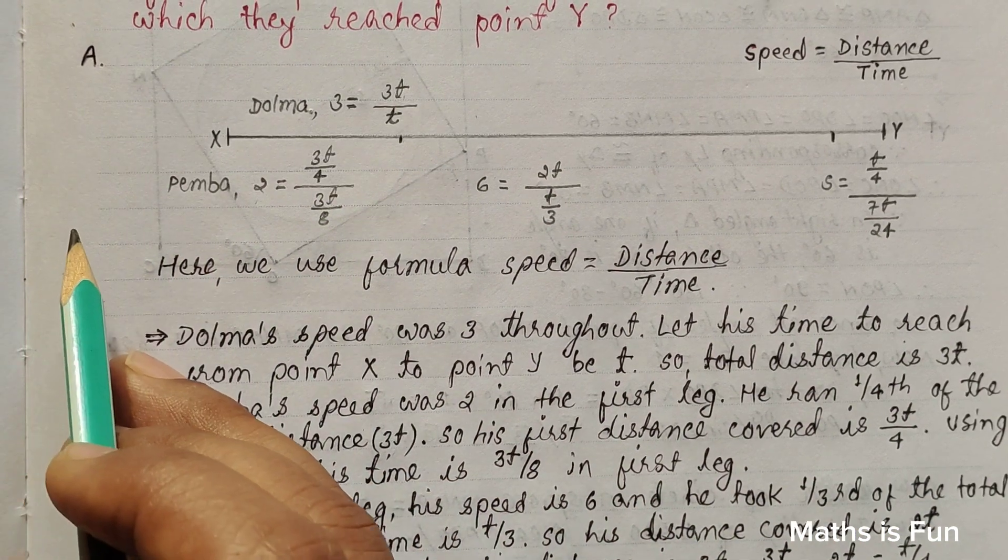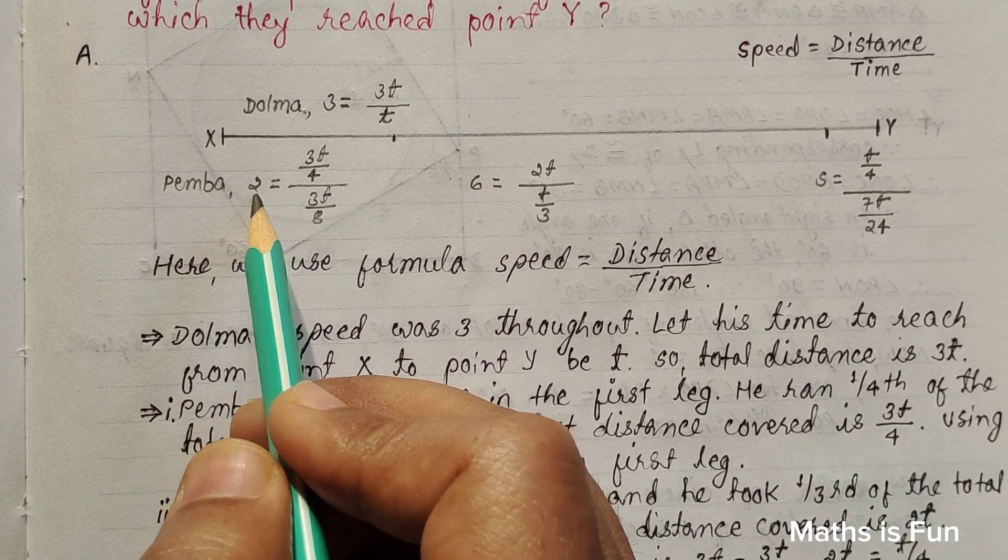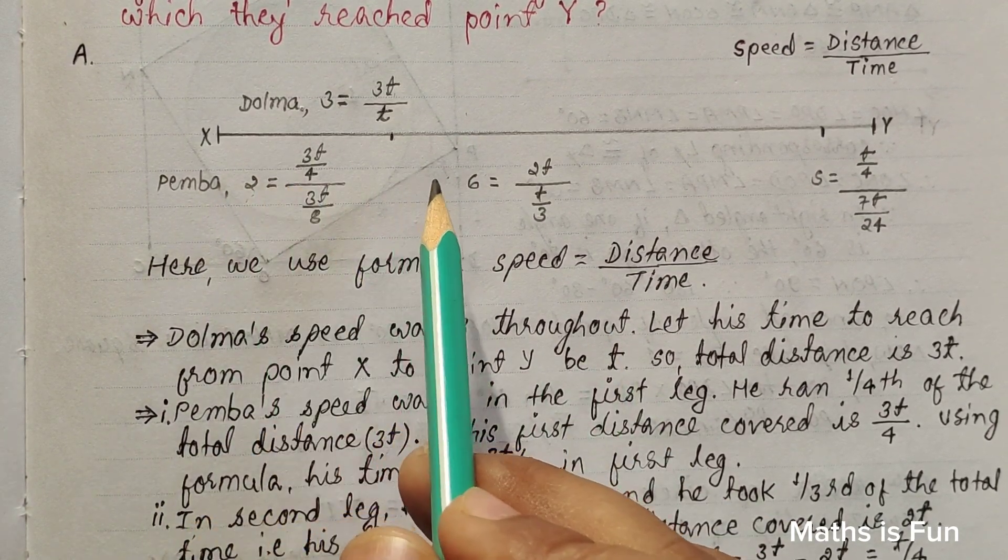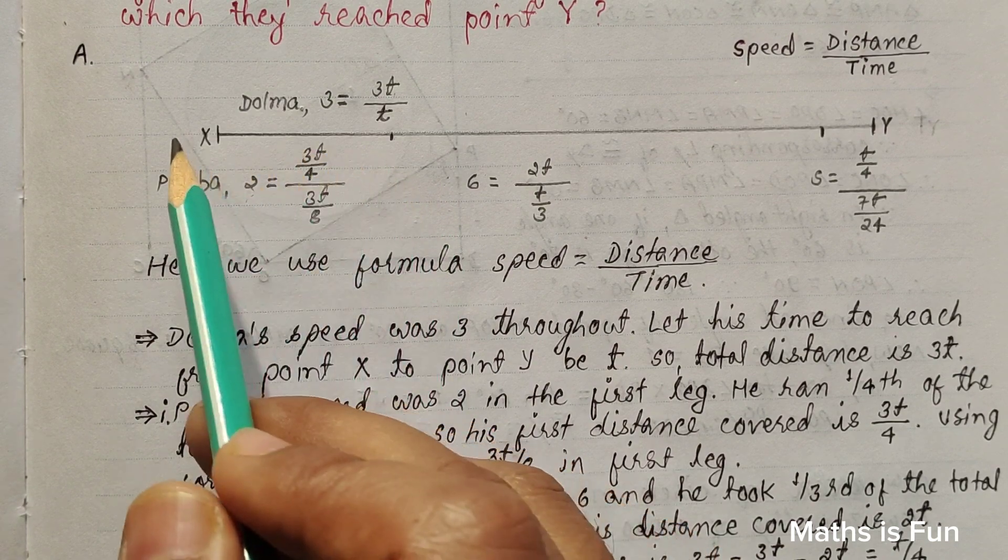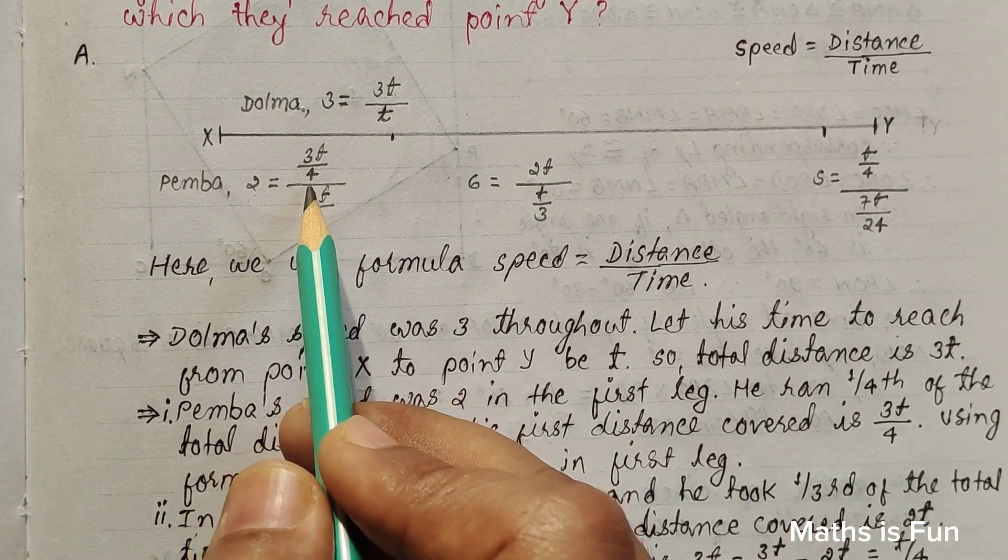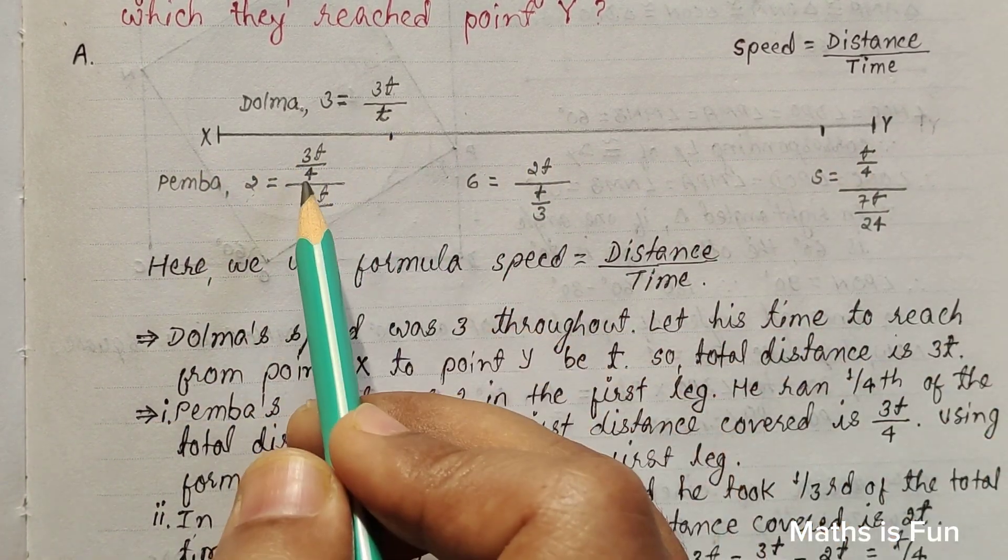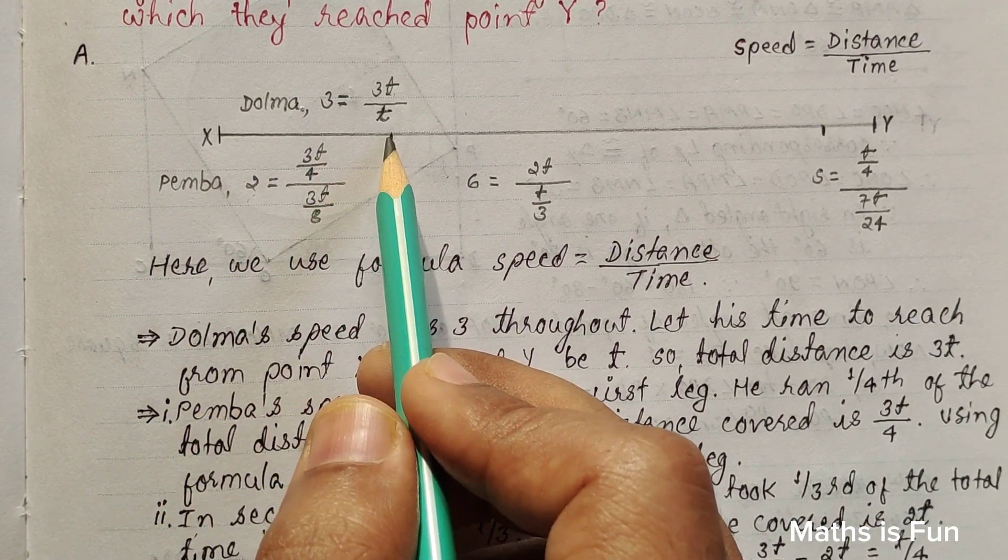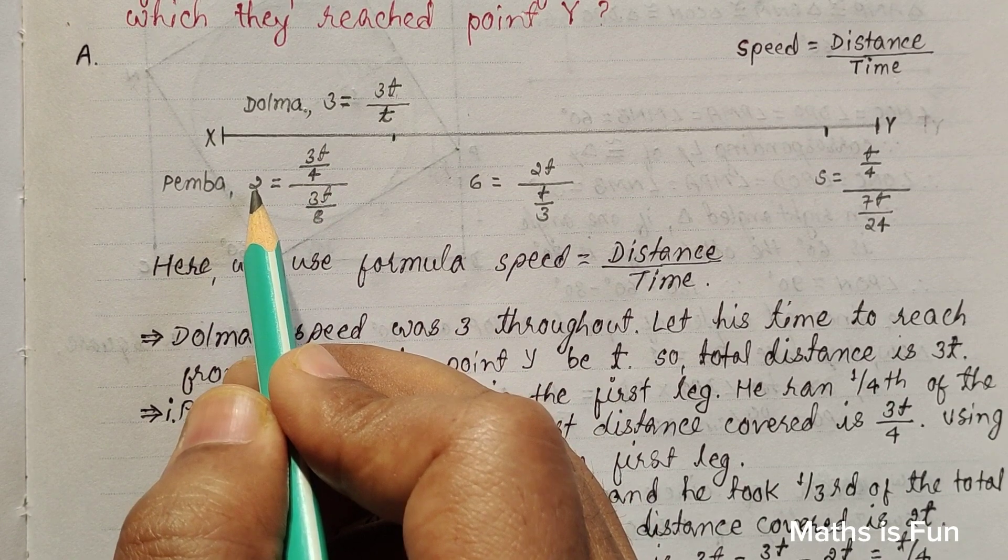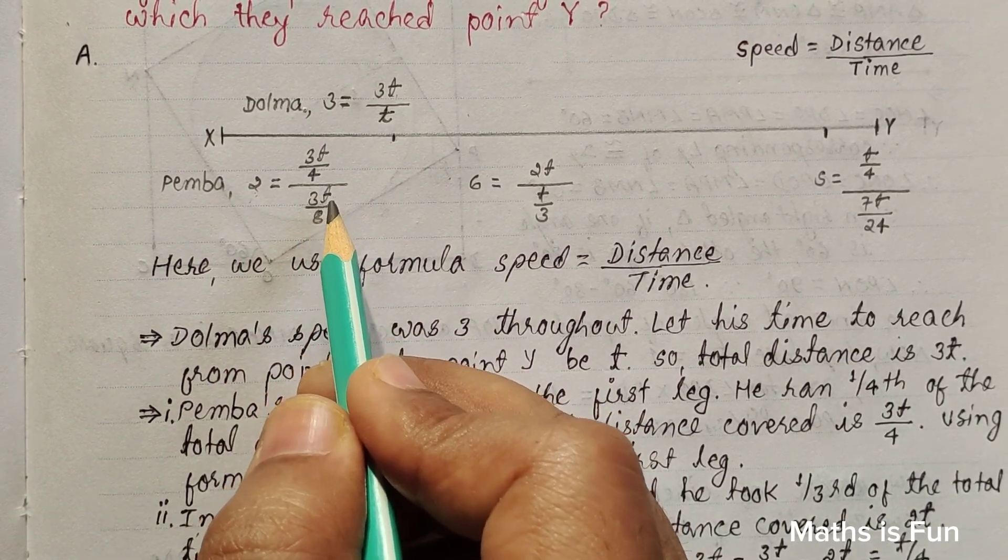Now coming to Pemba, Pemba started to run with speed 2 in the first leg. He ran one fourth of his total distance of 3T, so his first distance covered is 3T over 4. This is only one fourth part, so we can keep 3T over 4 distance. 2 is his speed, so we can calculate this part, so it comes out to be 3T over 8.